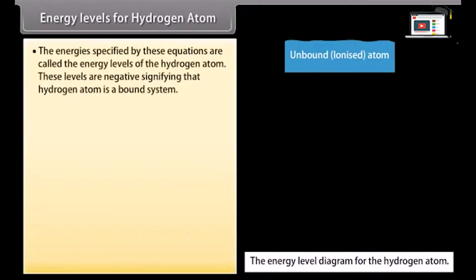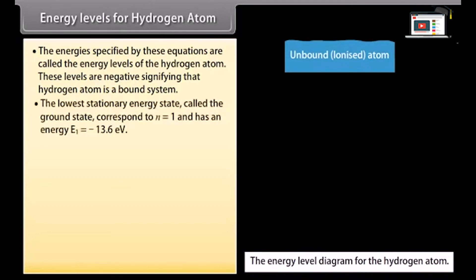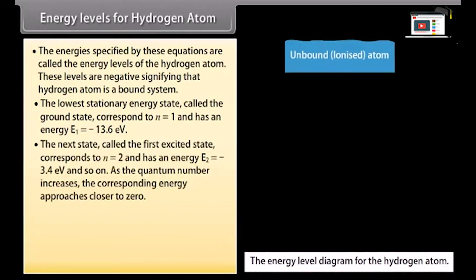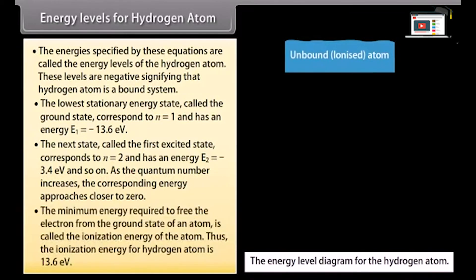The energies specified by these equations are called the energy levels of the hydrogen atom. These levels are negative, signifying that the hydrogen atom is a bound system. The lowest energy state, called the ground state, corresponds to n = 1 and has energy E1 = −13.6 eV. The first excited state corresponds to n = 2 with E2 = −3.4 eV, and so on. As the quantum number increases, the energy approaches closer to zero. The minimum energy required to free the electron from the ground state is called the ionization energy, which for hydrogen is 13.6 eV.